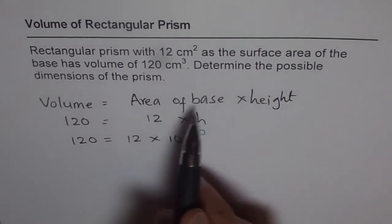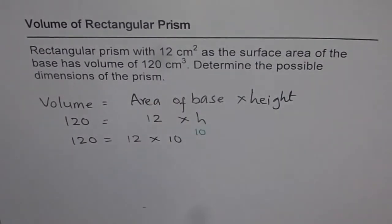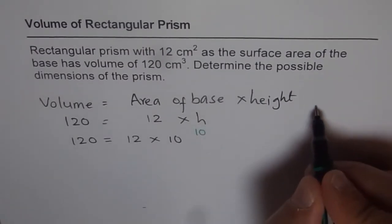And we already know area of base is 12. It says determine the possible dimensions of the prism. Means we need to find what the base is. But we are given the base, its area is 12 cm². How do you get 12 cm²? That is the real question. Let's make a sketch and then understand it.